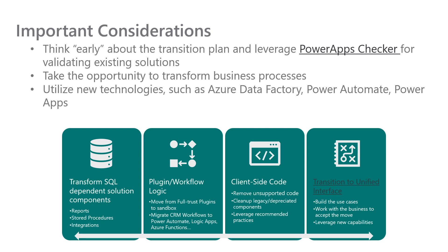Consider migrating your existing CRM workflows to Power Automate, Logic Apps, and Azure Functions. Evaluate your existing client code for unsupported code and remove any legacy and deprecated code. Finally, have a UCI transition plan — consider how you will work on transitioning to the unified interface.